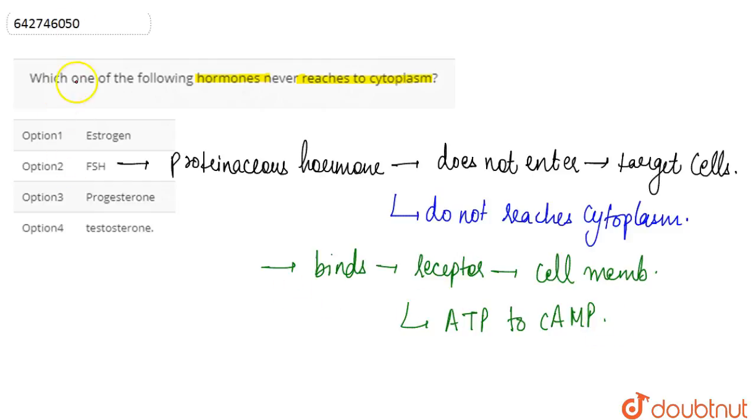So we can simply say that option two is our correct answer, that is FSH. The rest - estrogen, progesterone, testosterone - they are not proteinaceous hormones. Rather, estrogen and testosterone are steroids. So FSH is our correct answer.